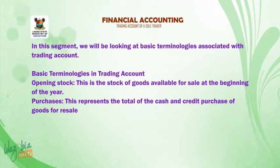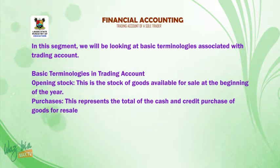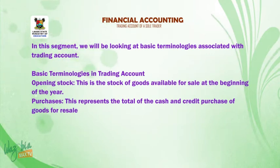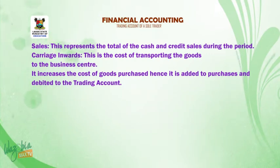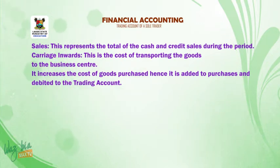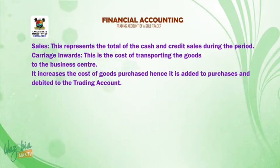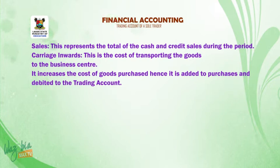Basic terminologies in trading accounts. Opening stock: this is the stock of goods available for sale at the beginning of the year. Purchases: this represents the total of the cash and credit purchases of goods for resale. Sales: this represents the total of the cash and credit sales during the period. Carriage inwards: this is the cost of transporting the goods to the business center — it increases the cost of goods purchased, hence it is added to purchases and debited to the trading account.